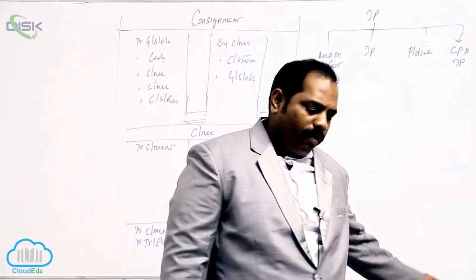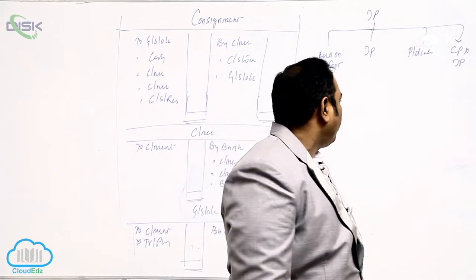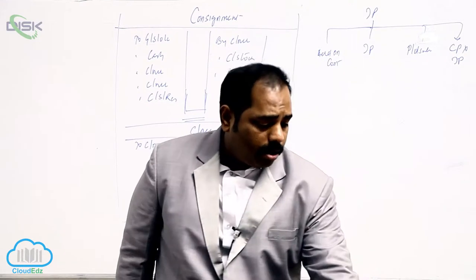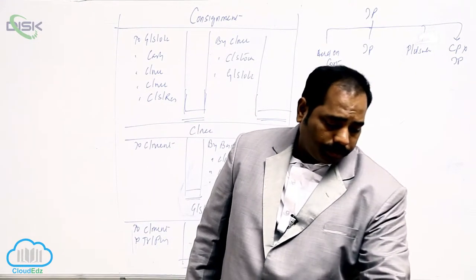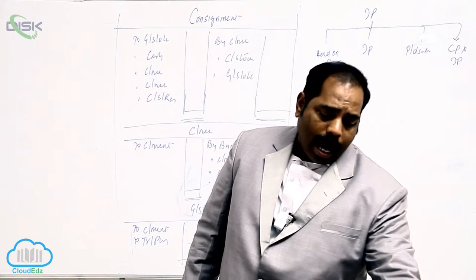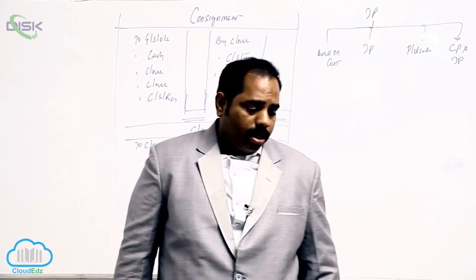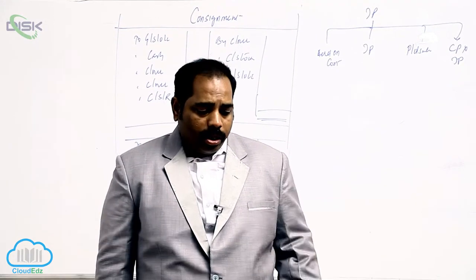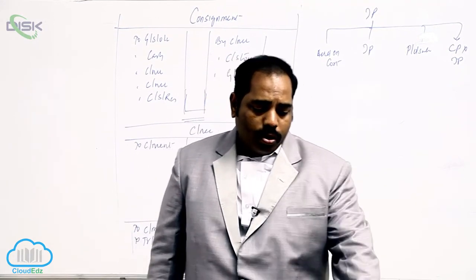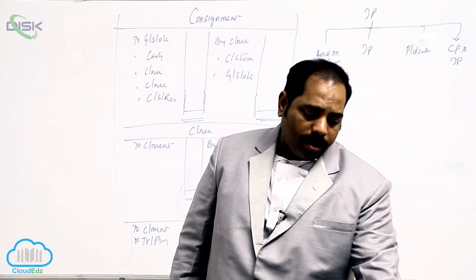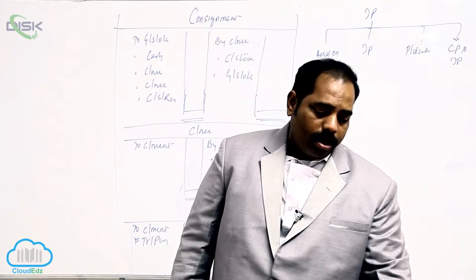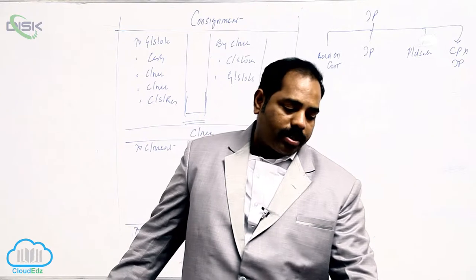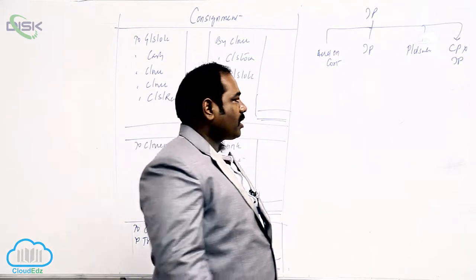The 12th problem is the same as the previous one with both cost price and invoice price given. Now take the 13th problem: Amir of Surat consigned goods to Praveen of Patna. The value of goods is 50,000, invoiced at 20 percent above cost.